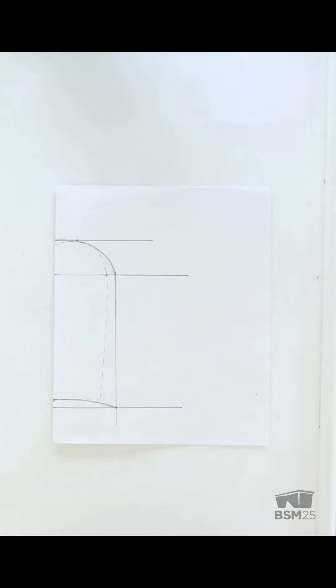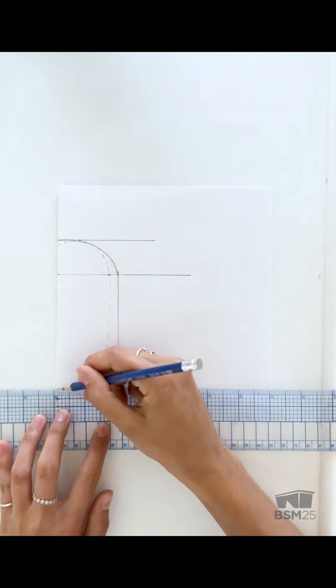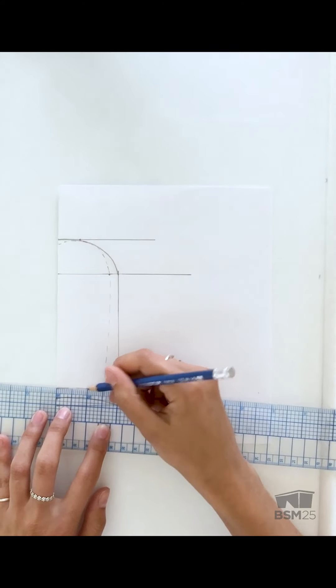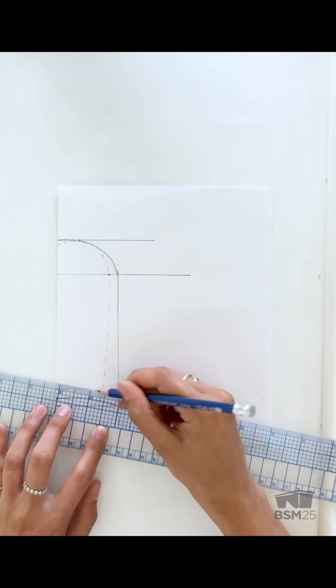For the final step, we need to make the entire pattern a quarter inch smaller than what it already is. So using a ruler, we're going to just make the entire pattern smaller by a quarter of an inch.